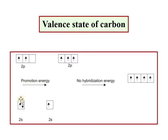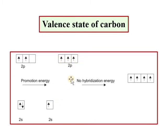In the valence state of carbon there are 4 unpaired electrons. When hybridization occurs, the s orbital and p orbitals are mixed. They are mixed to form hybrid orbitals of equal energy. When the p orbitals are mixed in, sp3 hybridized orbitals are formed. The energies of these orbitals combine in such a way that the overall energy remains the same.